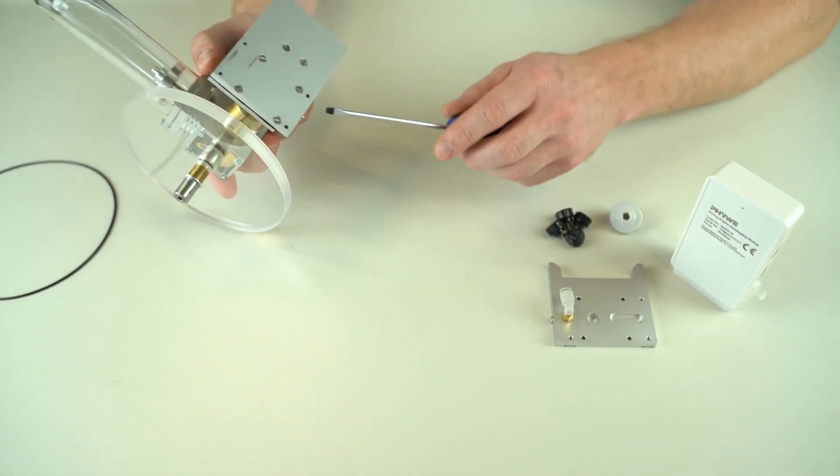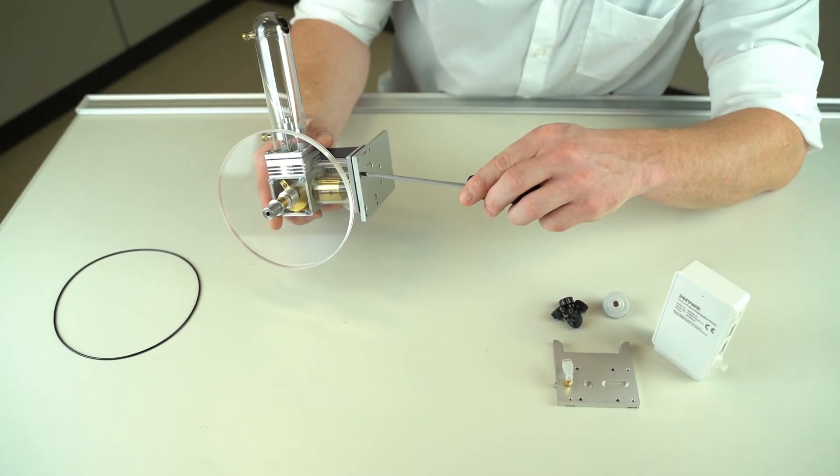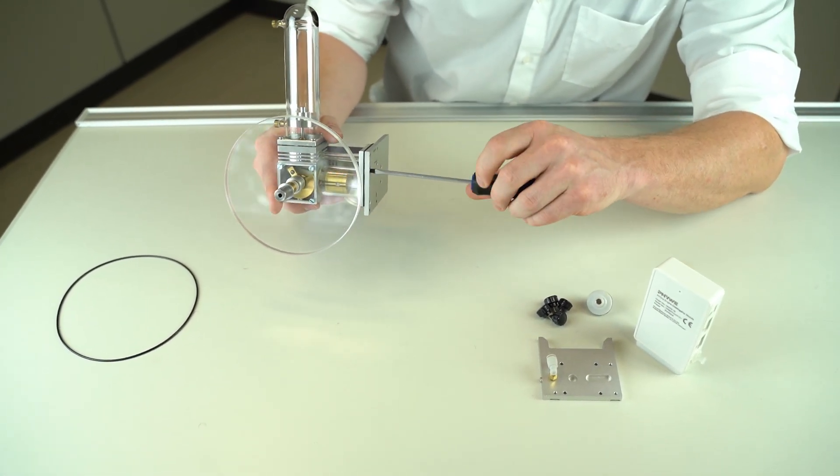Now take a screwdriver and unscrew the four screws from the bottom of the base plate from the old module.